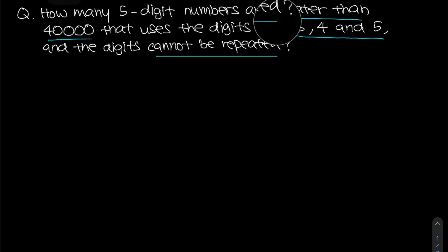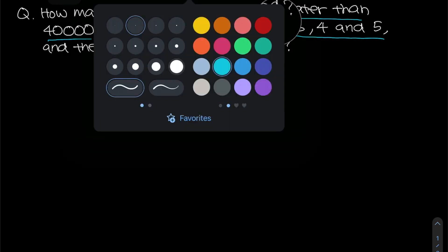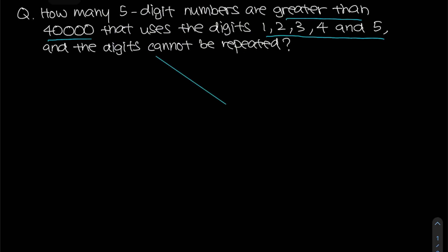A lot of you tend to list them down. You shouldn't be listing them down because there are actually a lot of possible answers. Instead of looking at this by listing, we can actually solve it using combinations as well.